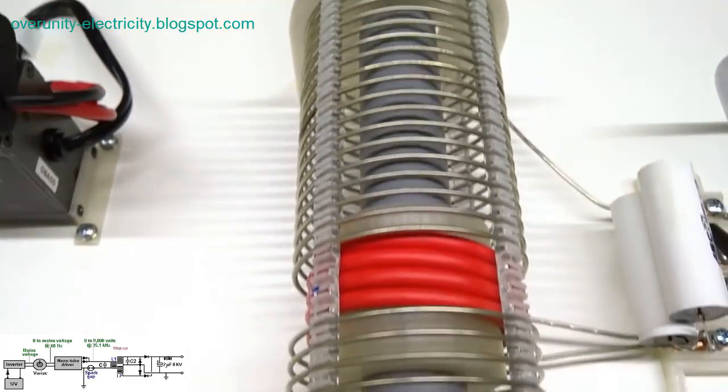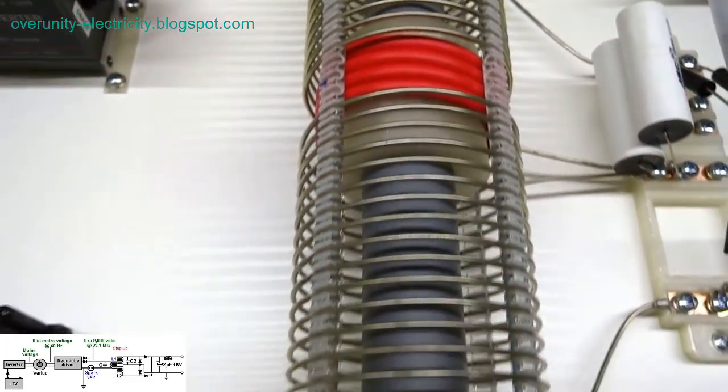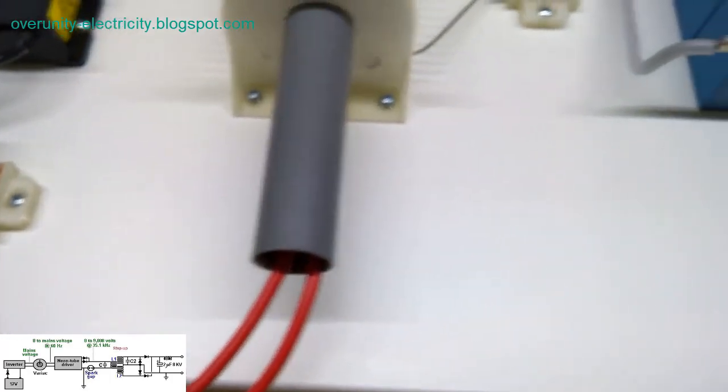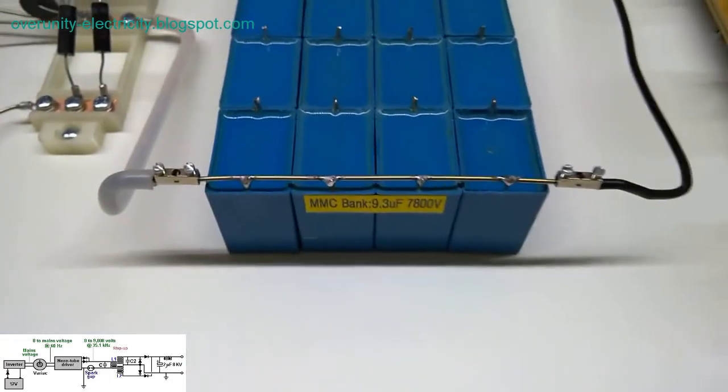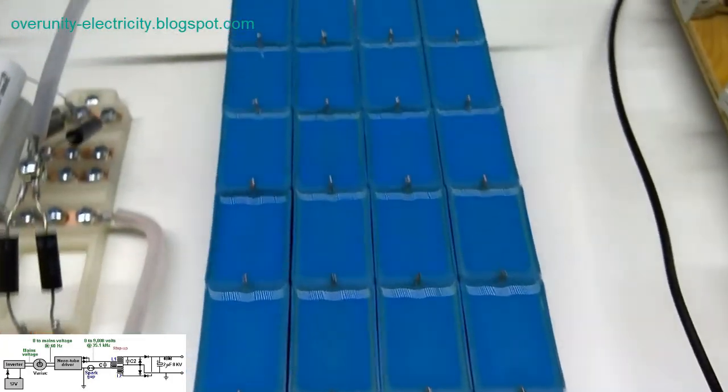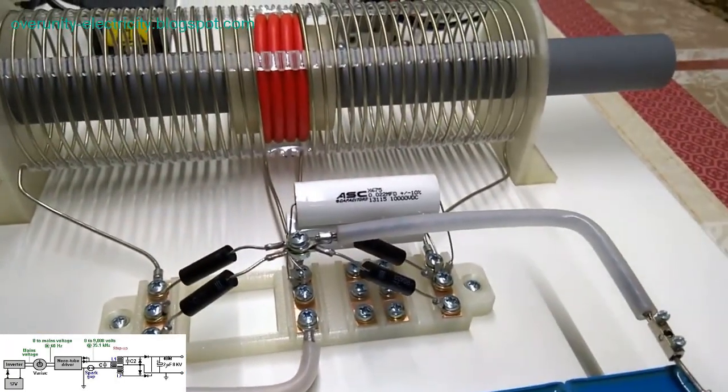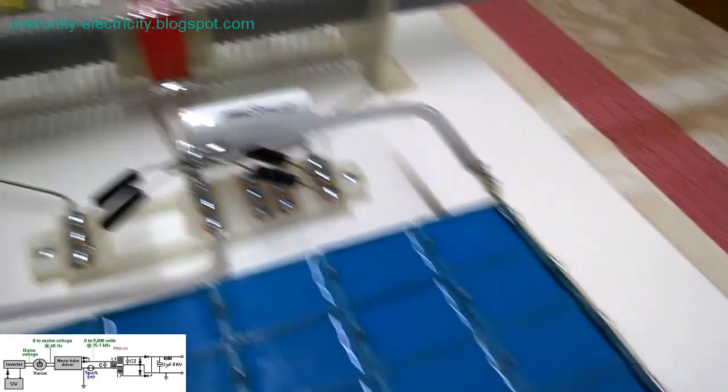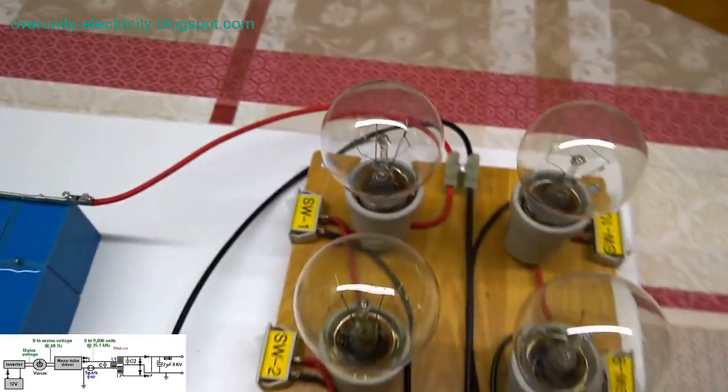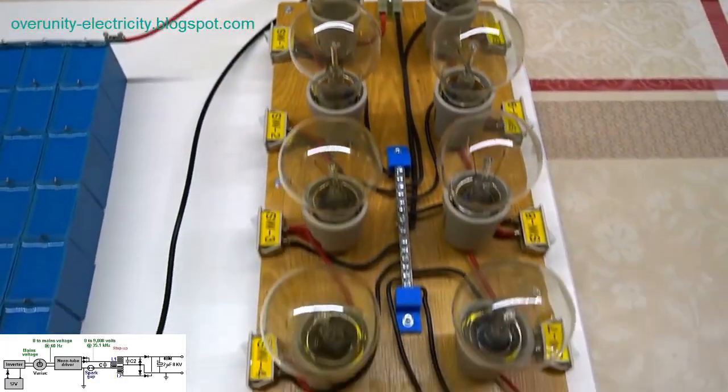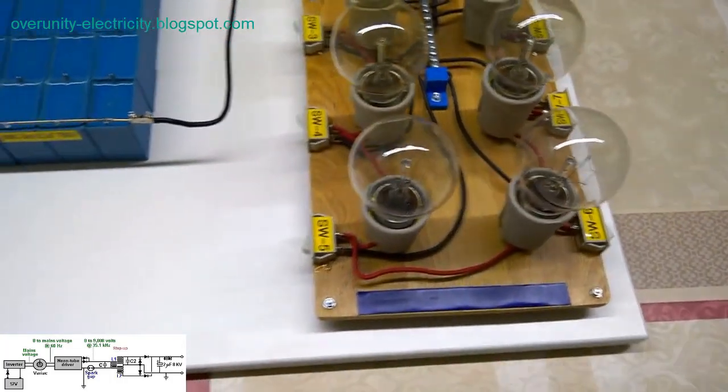By manipulating the number of turns in primary and secondary coils, the voltage can be stepped up or down. For instance, if 3000 volts are input into a primary coil with 10 turns, the secondary coil with 30 turns will yield an impressive 9000 volts. This basic principle demonstrates the power of induction coils in voltage transformation.